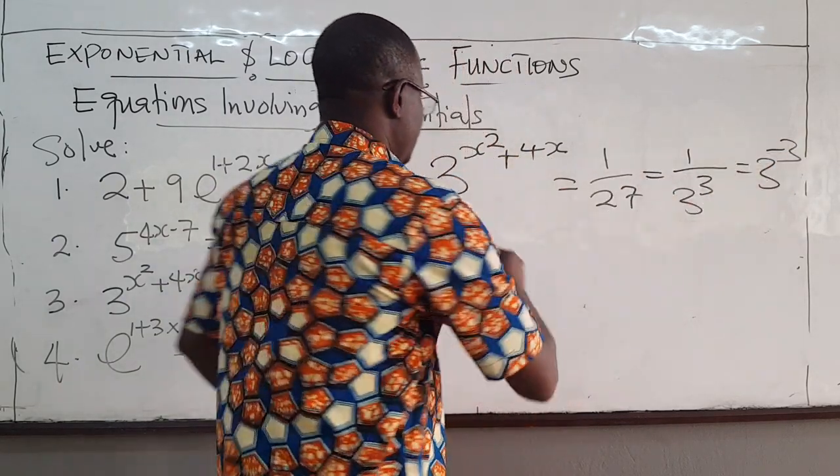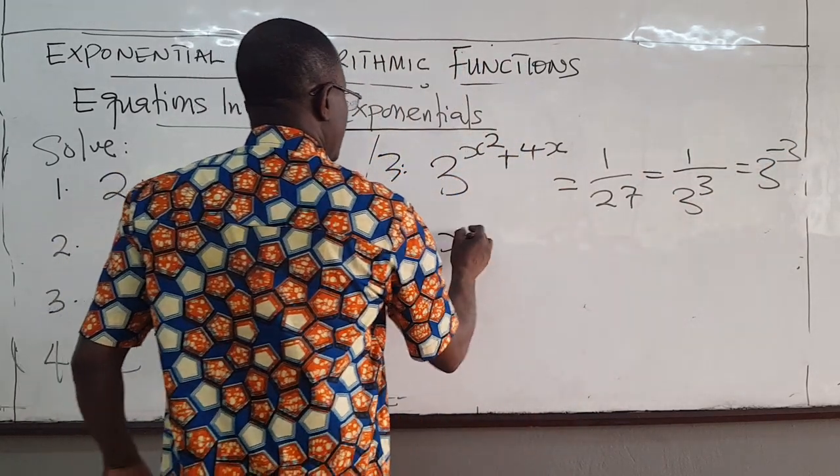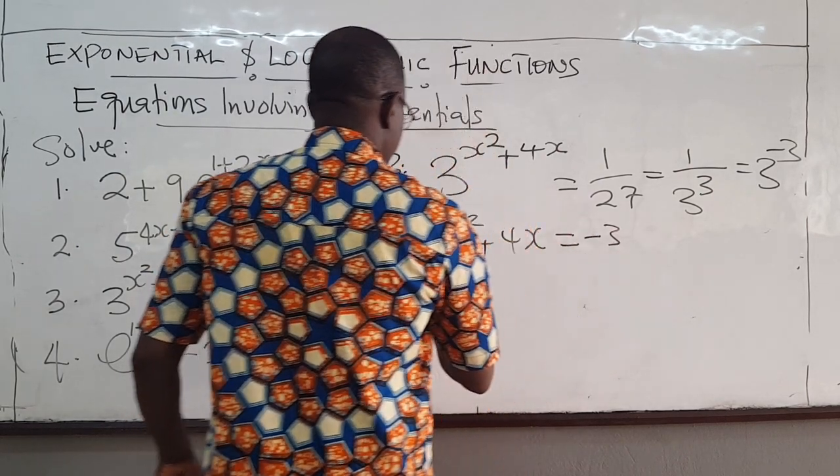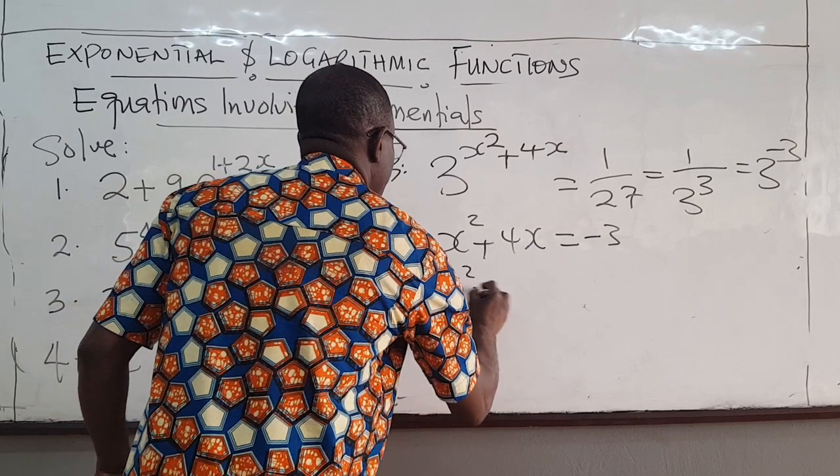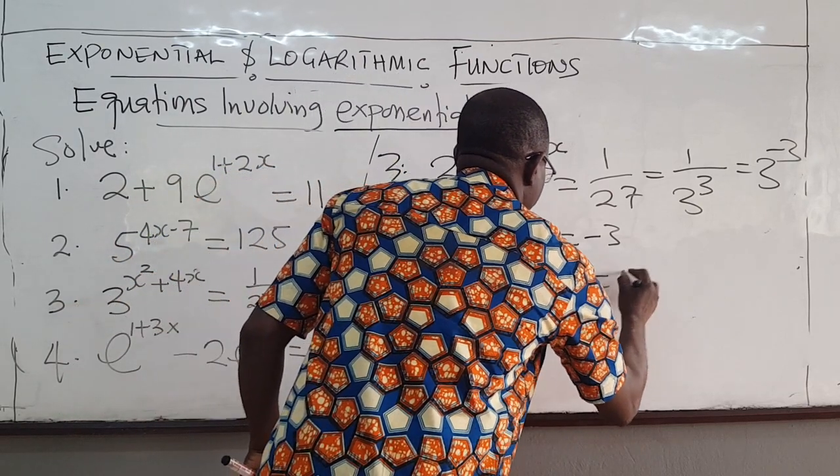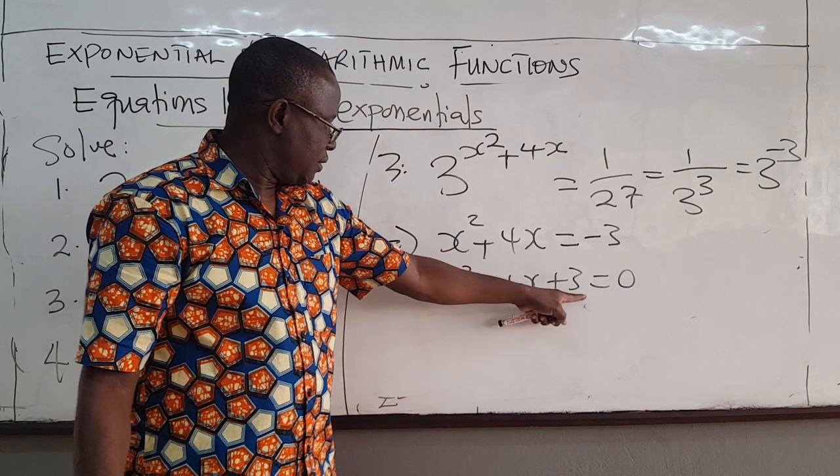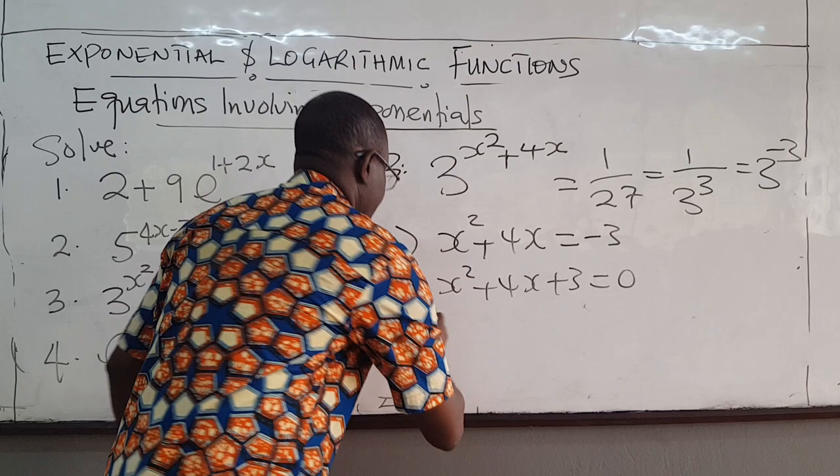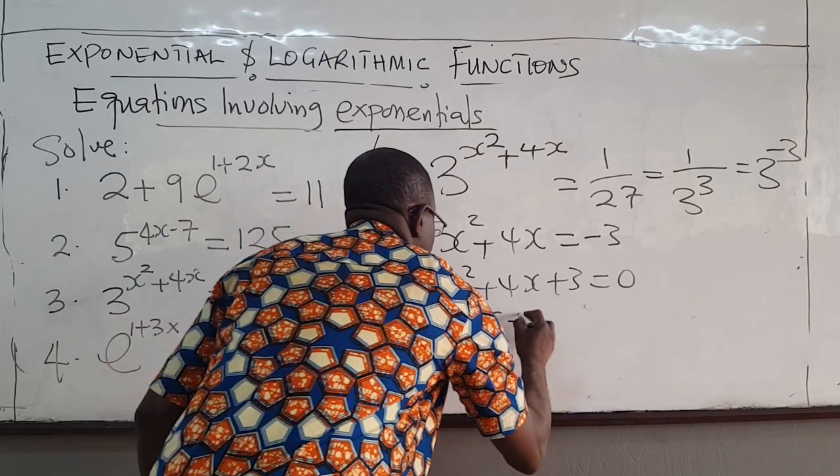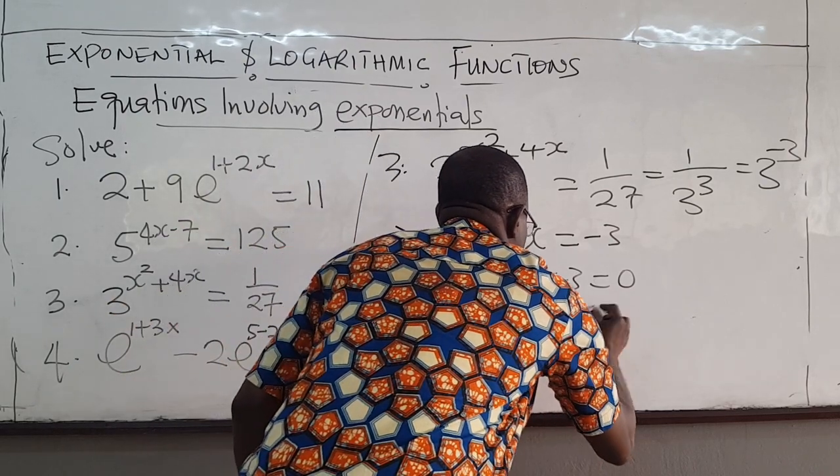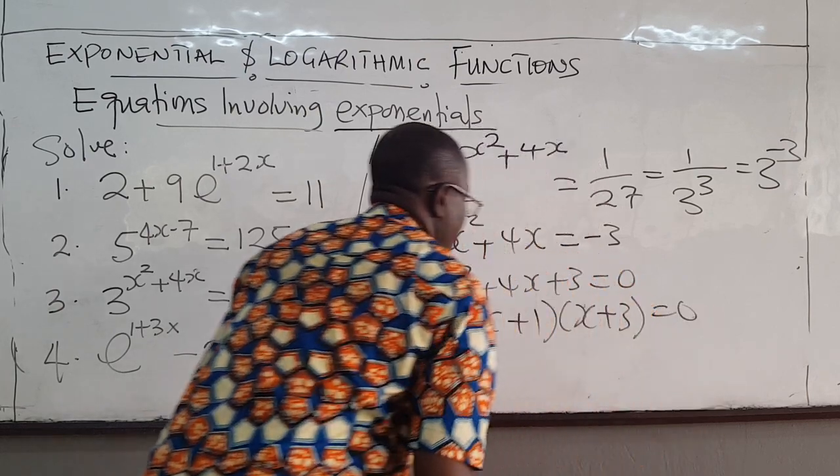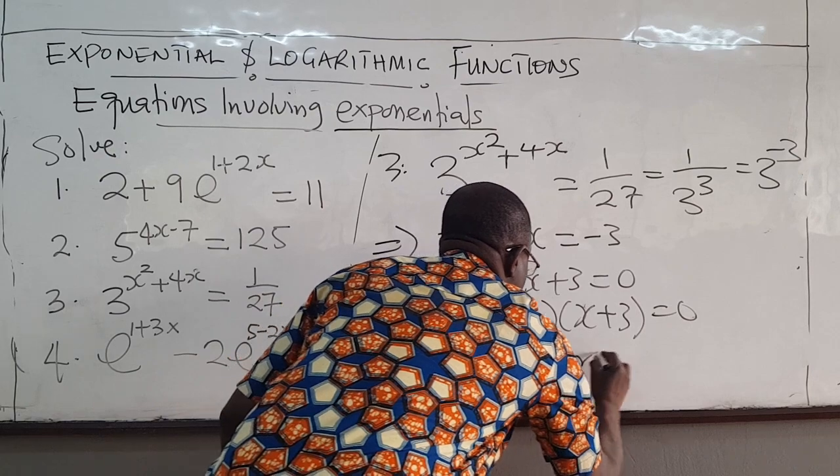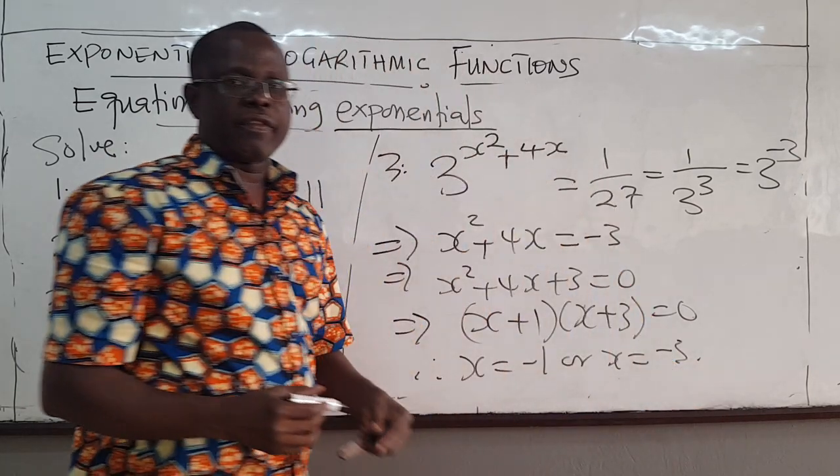The exponents must be the same. So x² + 4x must equal -3, which means that x² + 4x + 3 = 0. Well, factors of 3 that would have to give you this are 1 and 3. So this can be written as (x+1) and then (x+3). And so x equals -1, or x equals -3.